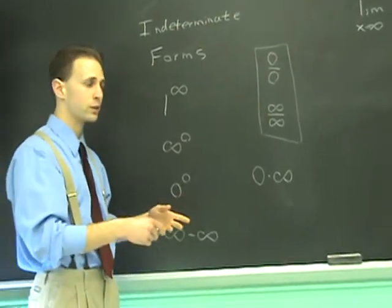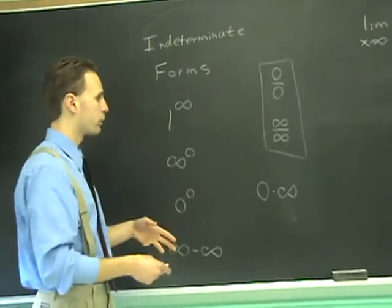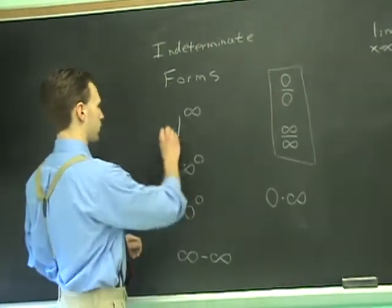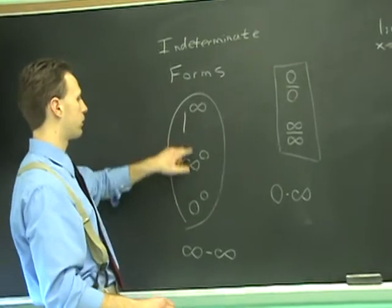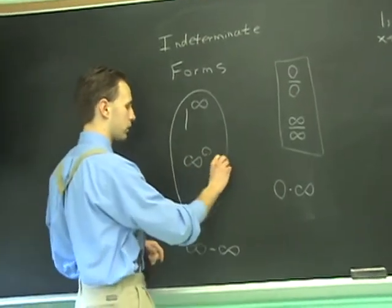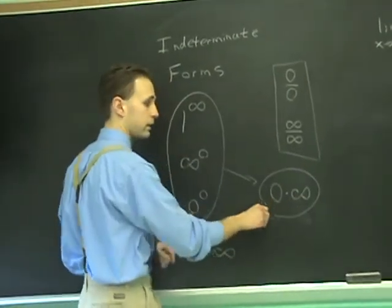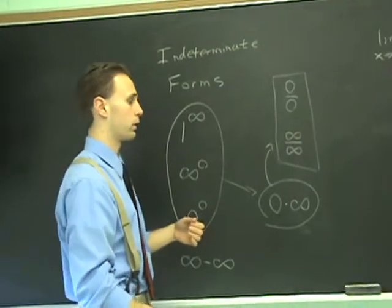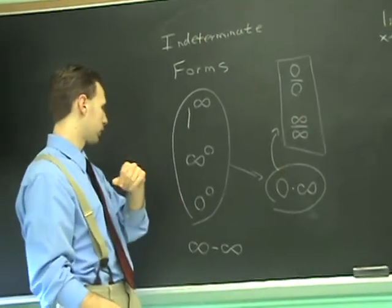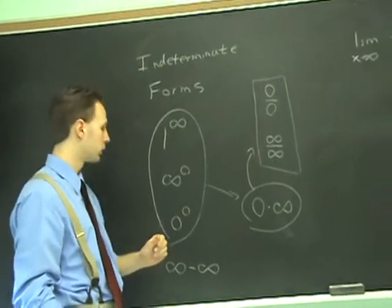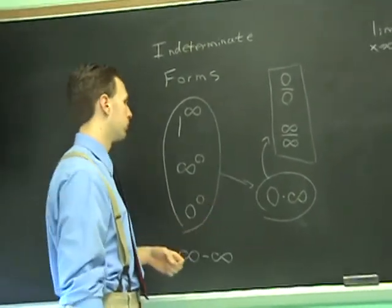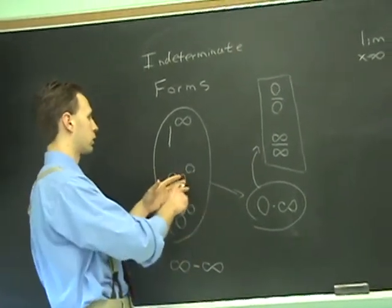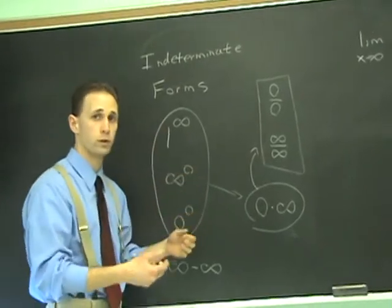L'Hôpital's rule can be used to determine limits of this type also, but in an indirect way. If you see one of these, any limit that's like this can be turned into a limit that's like that. And any limit that's like this can be turned into one of these to which L'Hôpital's rule can be directly applied. The outlier is the infinity minus infinity one, and that's kind of a different story altogether. That takes a little bit of algebraic manipulation. But what I'm going to do is a couple of examples of how evaluating these types of limits works with L'Hôpital's rule.